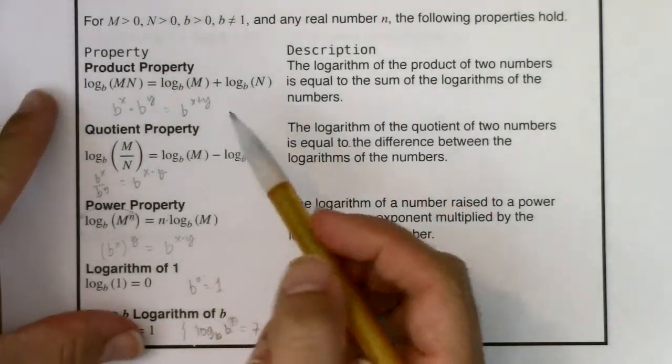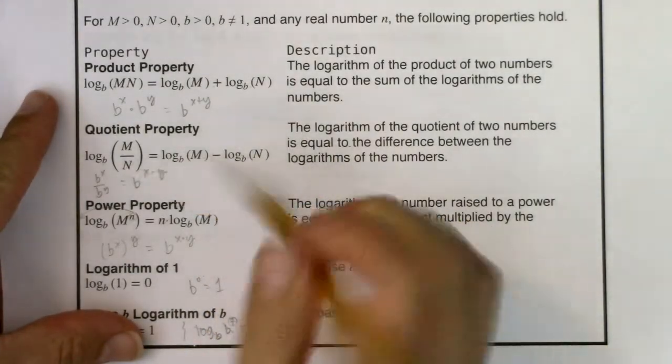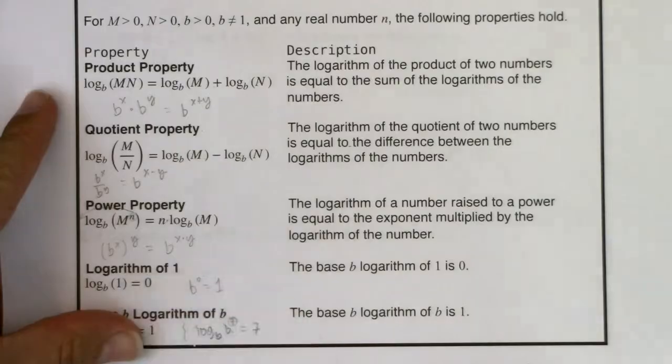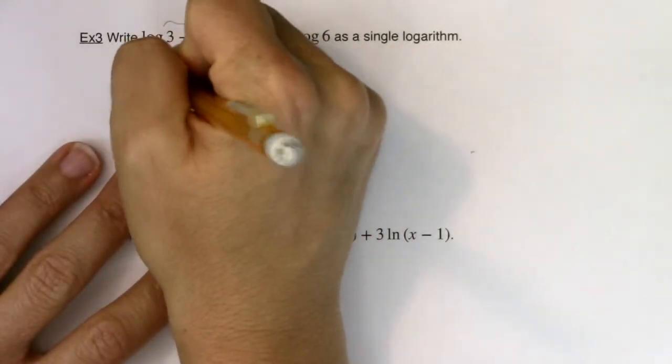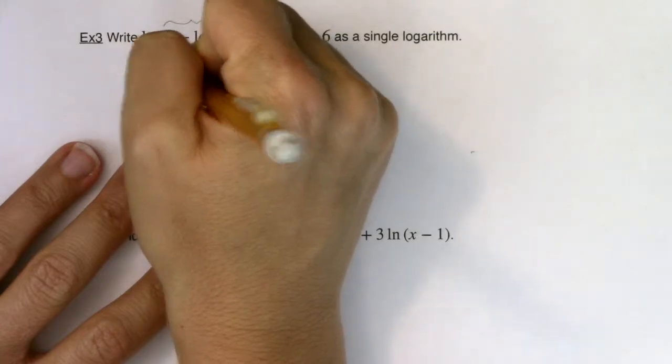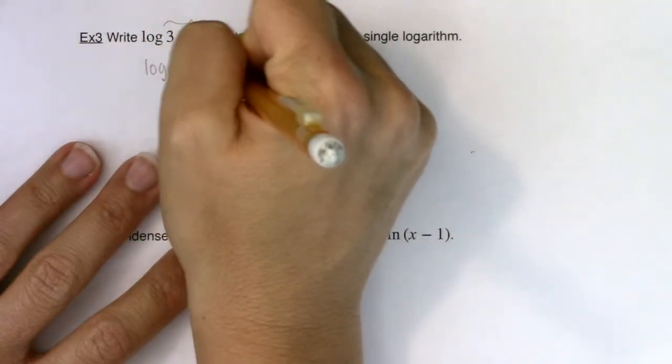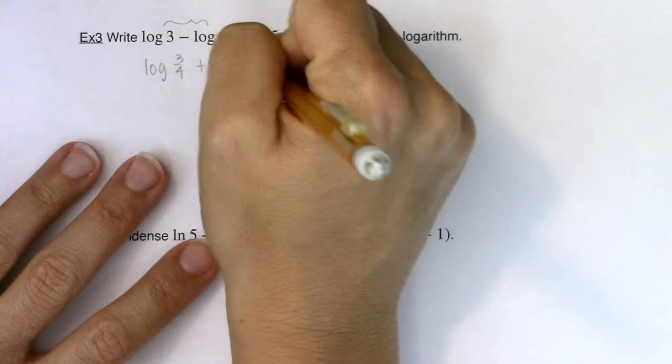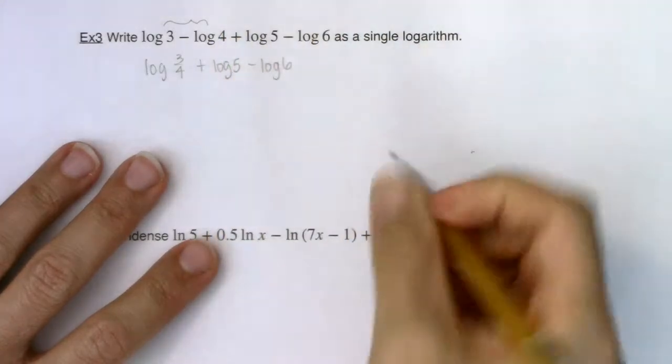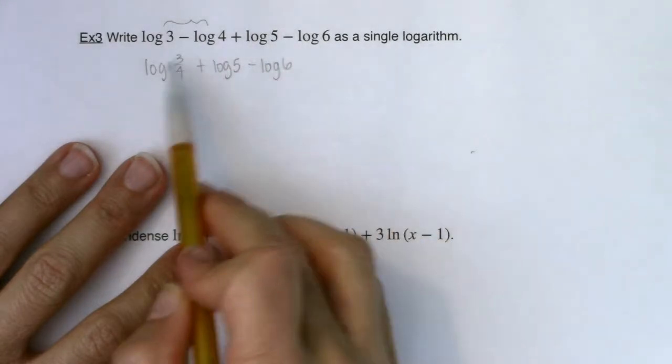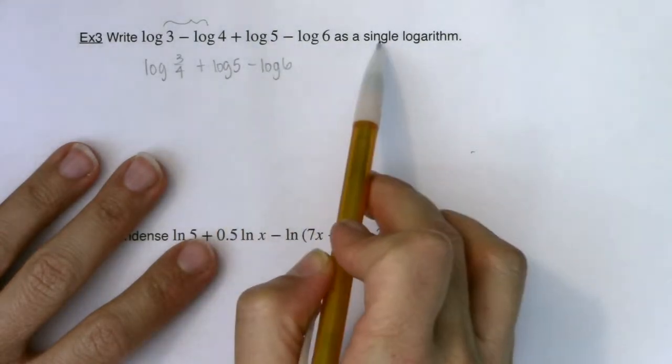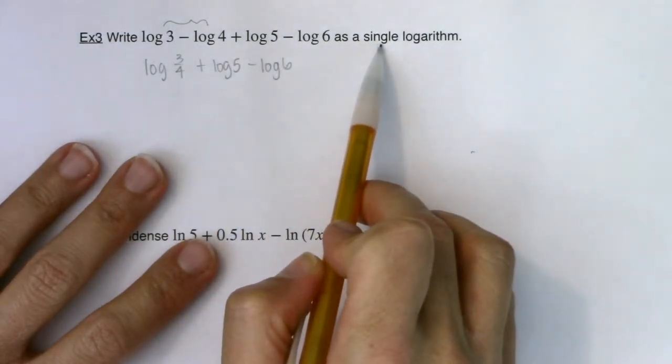So I'm going to use the quotient property in the reverse order. We've been expanding. Now we're going to simplify. So I will rewrite this as log of 3 over 4. And I will keep this as my plus log 5 and minus log 6. So just in going from step 1 to step 2, I had four logarithms and now I'm at three logarithms. I got to keep going because I want a single logarithm.